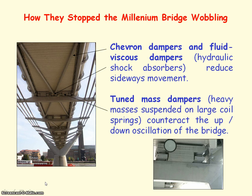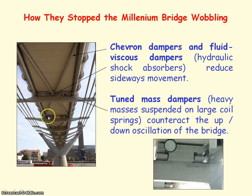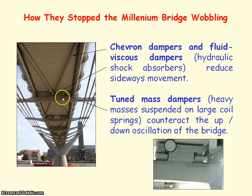When the Millennium Bridge opened in 2000, it had to be closed a few months later because of excessive wobbling of the bridge when people were walking over it. They had to add dampers to the bridge to stop this wobbling motion — chevron dampers to reduce sideways motion and spring dampers to reduce the up-down motion of the bridge.